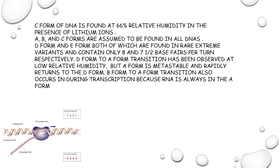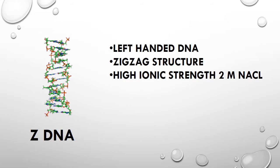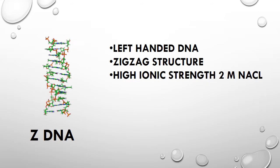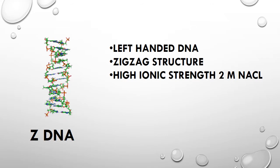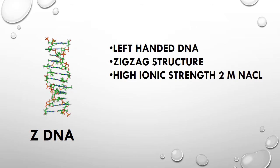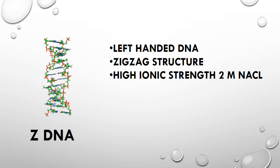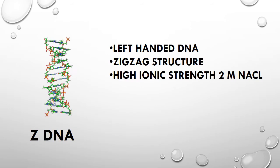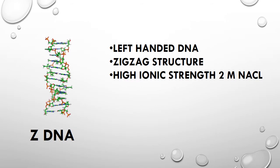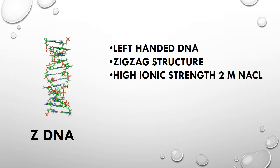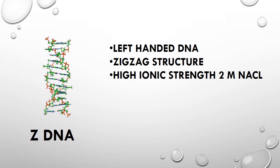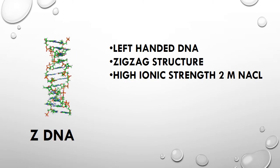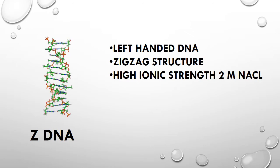B form to A form transition also occurs during transcription because RNA is always in the A form. The next type is Z-DNA, or left-handed DNA. Crystallographic studies on synthetic nucleotides consisting of alternating purines and pyrimidines have shown that left-handed DNA can also exist. This DNA is called Z-DNA because of its zigzag structure. Z-DNA can be found in solutions of high ionic strength, such as 2 molar sodium chloride. Specific segments of a DNA molecule can undergo conformational changes from B form to Z form and vice versa, brought about by regulatory proteins. The Z form is postulated to play a role in gene regulation.